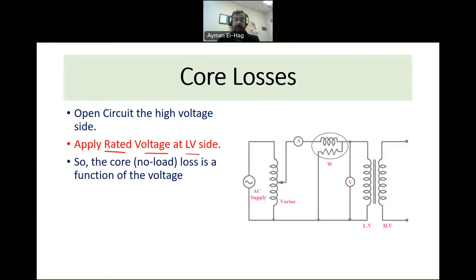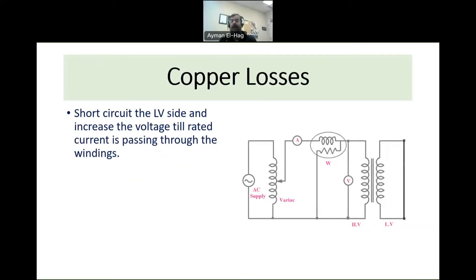So the core loss of the transformer is a function of the voltage. Now let's go to the copper loss. How we measure the copper loss? We short circuit the low voltage side, apply a voltage at the high voltage side so that we will have the rated current going through the winding. So this loss is actually a function of the current.